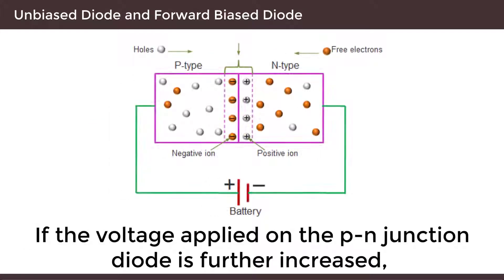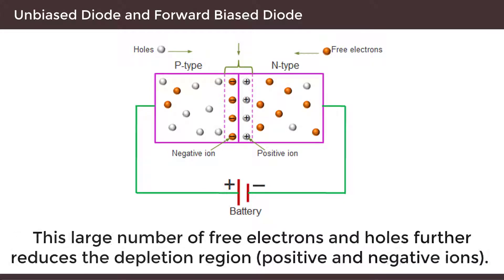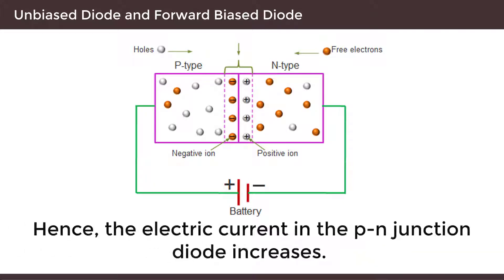If the voltage applied on the PN junction diode is further increased, then even more number of free electrons and holes are generated in the PN junction diode. This large number of free electrons and holes further reduces the depletion region of positive and negative ions. Hence, the electric current in the PN junction diode increases.